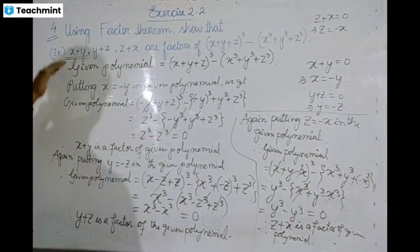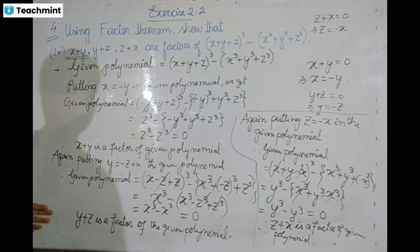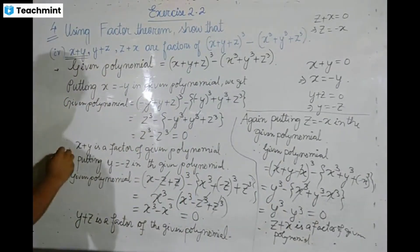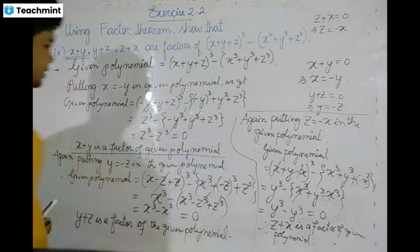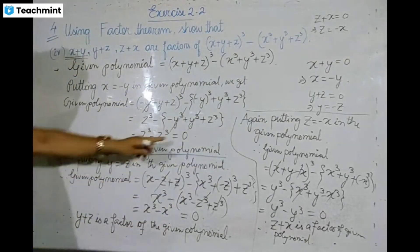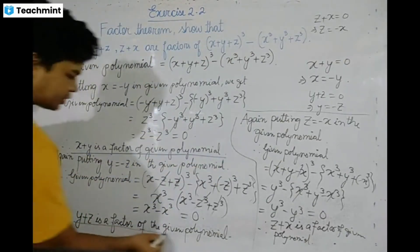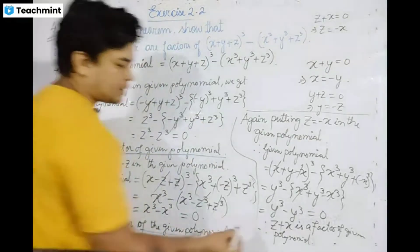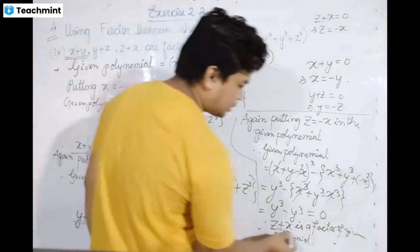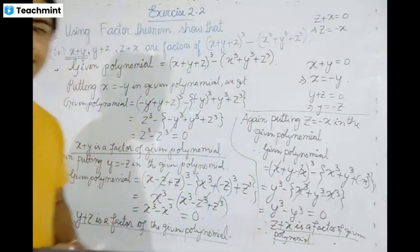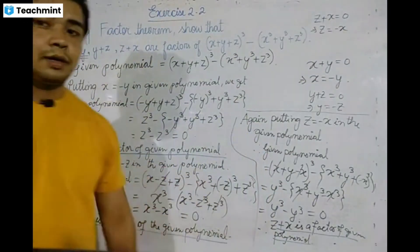So the three factors are x plus y, y plus z, and z plus x. Therefore x plus y is a factor, y plus z is a factor, and z plus x is also a factor of the given polynomial.